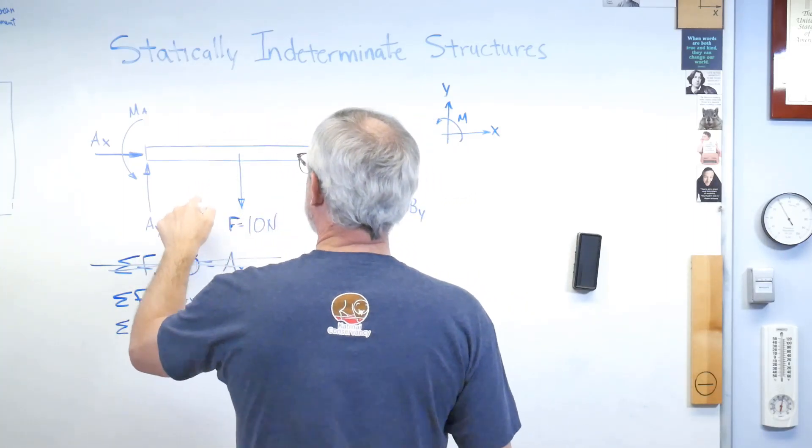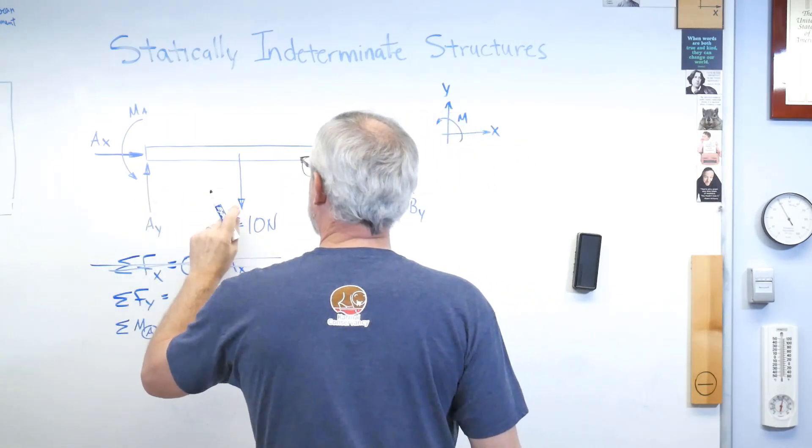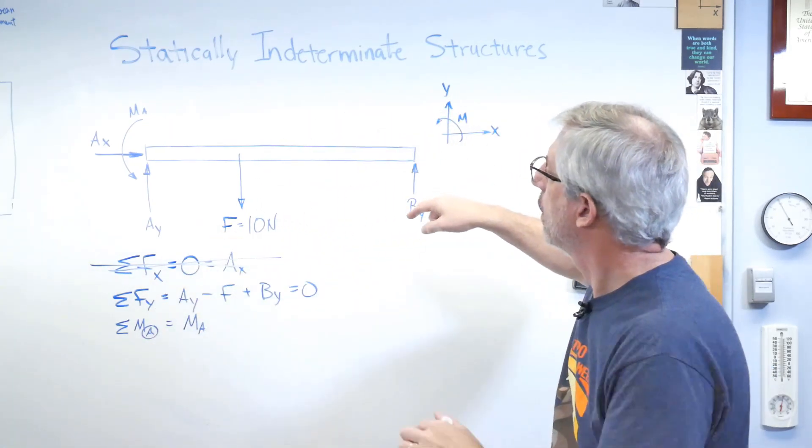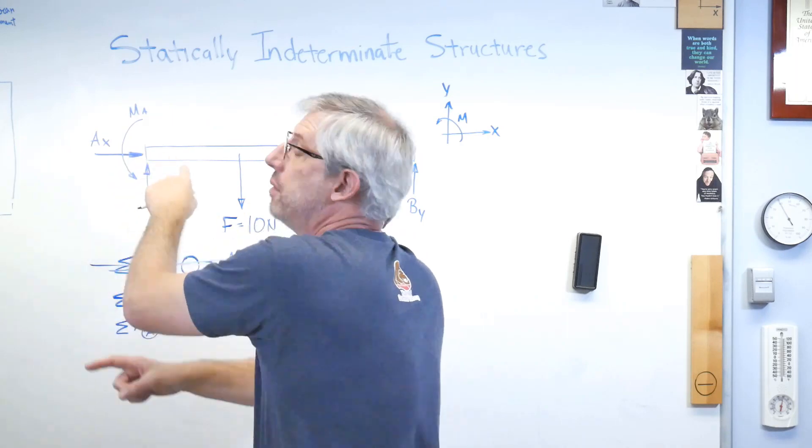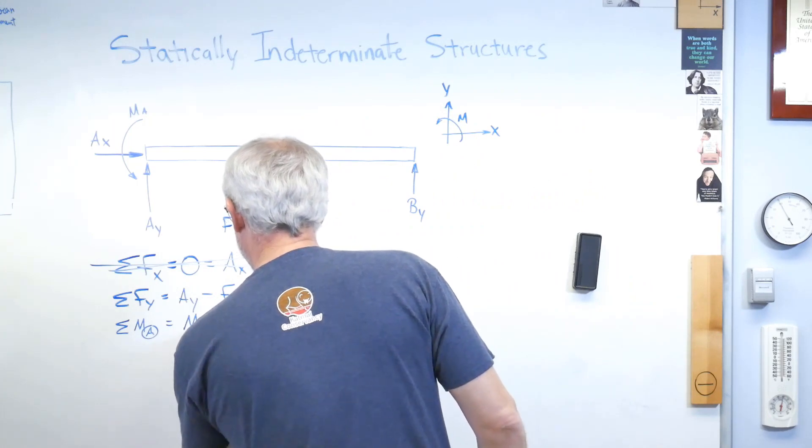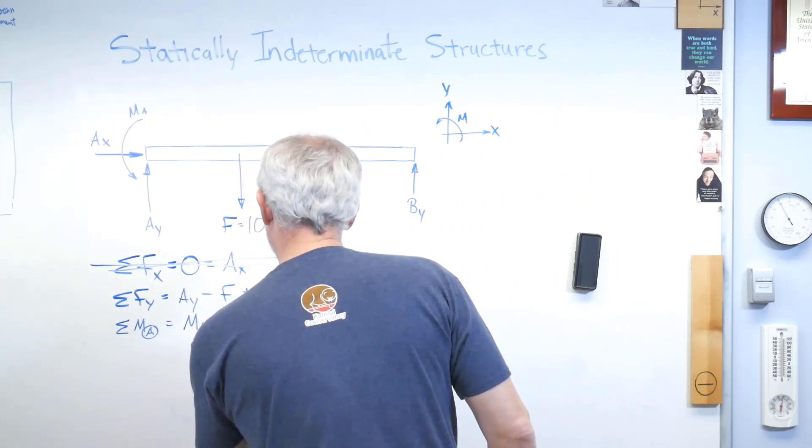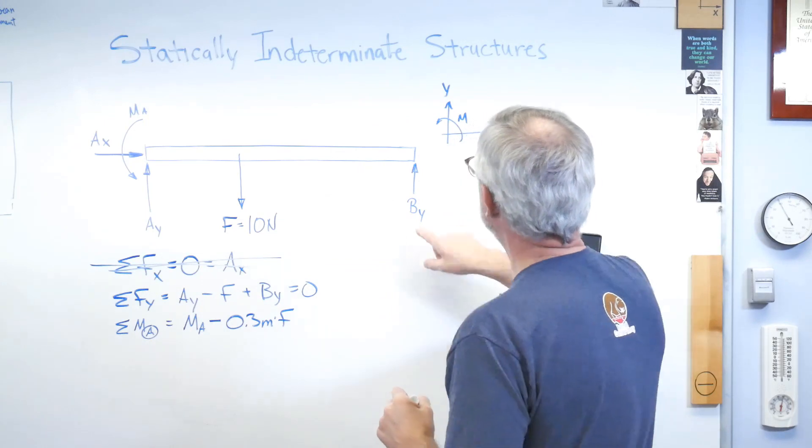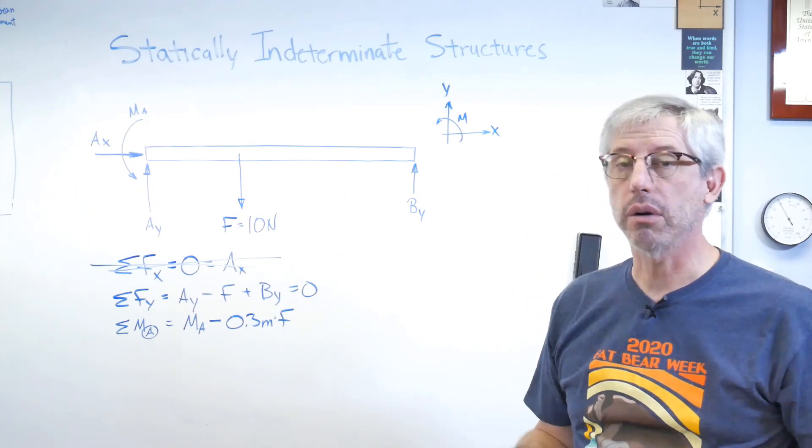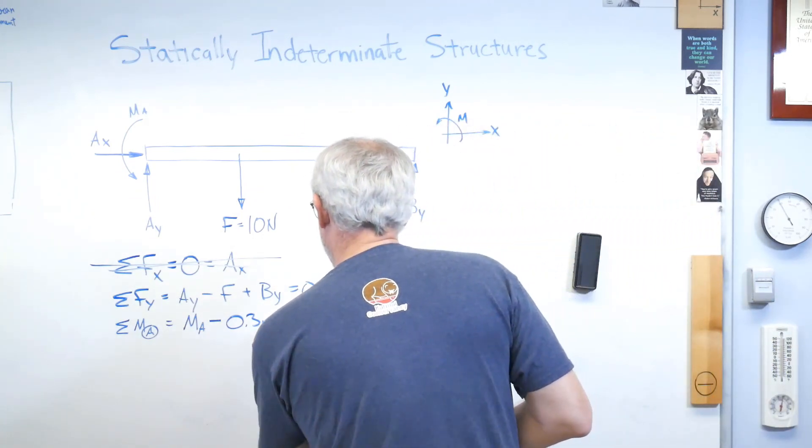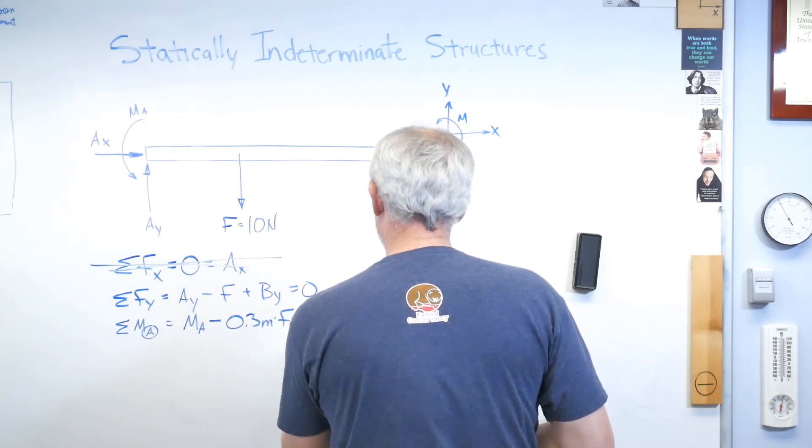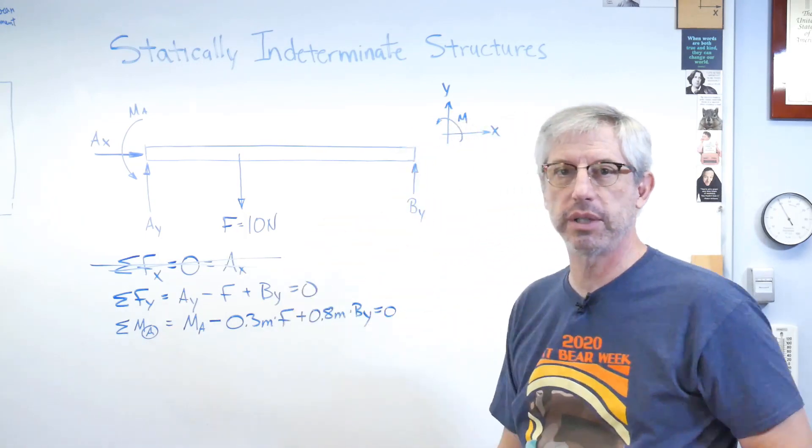MA is counterclockwise. My positive sign convention says counterclockwise is positive, so I'll just add that in here. I've got 0.3 times F—that's terrible, isn't it? Hang on, that's better. So if I put my finger there, F tries to induce a clockwise moment. Well, that's negative according to that, so minus 0.3 meters times F. So far so good. Let's bring it on home here. By is positive, so that's going to induce a counterclockwise moment—that's positive. So plus 0.8 meters times By, and that's all zero. Perfect, there's my second equation.